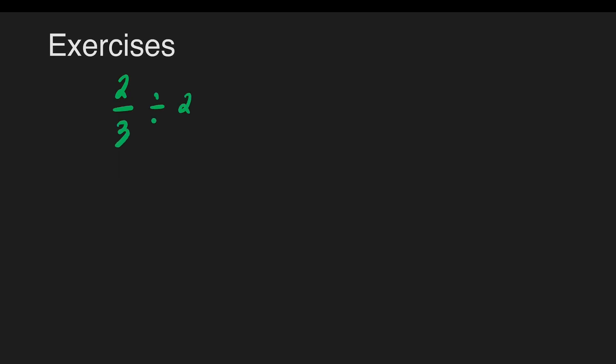Let us have some exercises. We have 2/3 divided by 2 and 1/2. In this case, we still follow the same steps. We copy 2/3, then change the division sign to multiplication sign. The divisor should be changed to its reciprocal. But we have a mixed number — we cannot change it to its reciprocal right away. We must change the mixed number to an improper fraction first, then get the reciprocal.